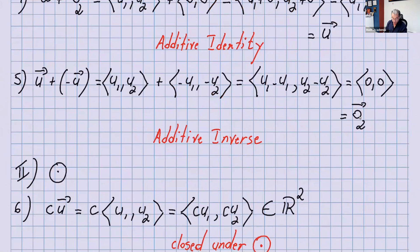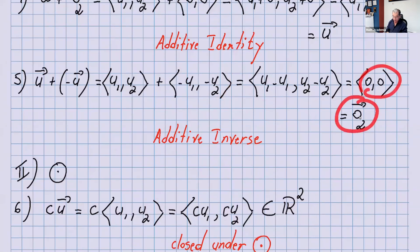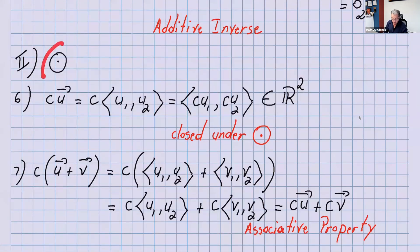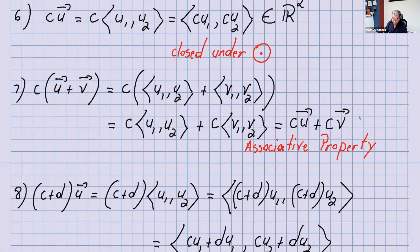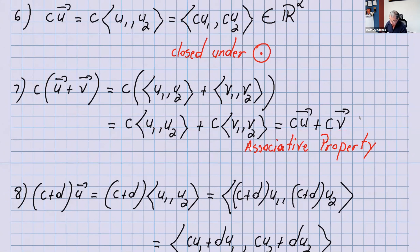For the additive inverse: U plus (negative U) uses the components (U₁, U₂) plus (−U₁, −U₂). Subtracting them gives the zero vector. Additive inverse satisfied. The next five axioms are about scalar multiplication. C times U is C times the components of U, which gives (CU₁, CU₂) — an ordered pair, so it's in R². Closed under scalar multiplication.